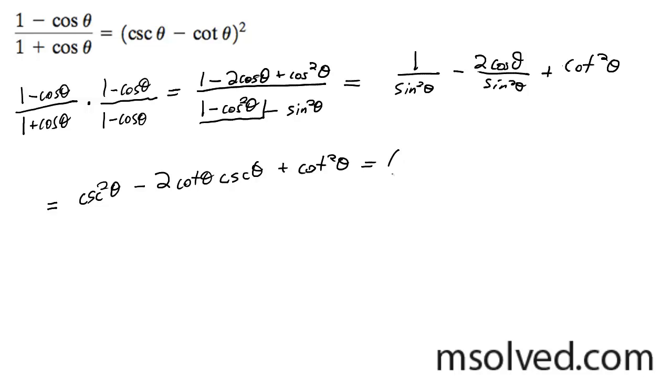And this can further be broken down to two different polynomials, which is cosecant theta minus cotangent theta, and then cosecant theta minus cotangent theta.